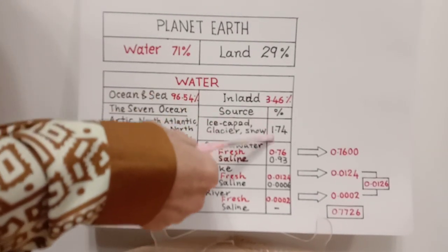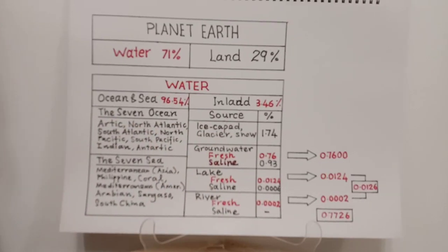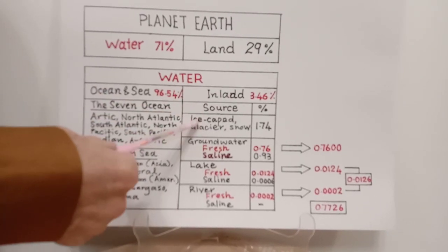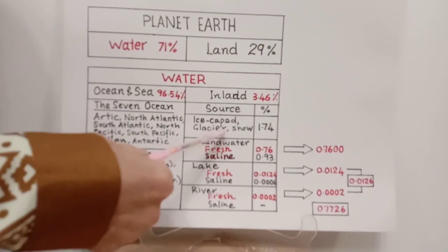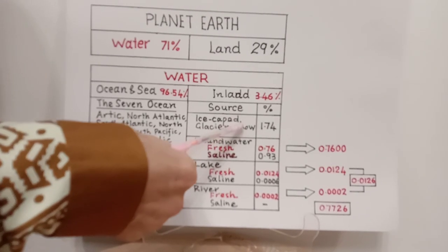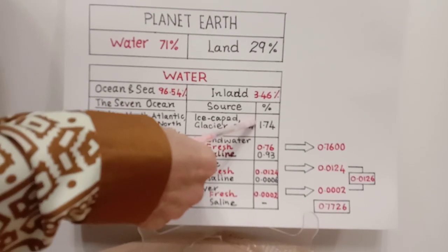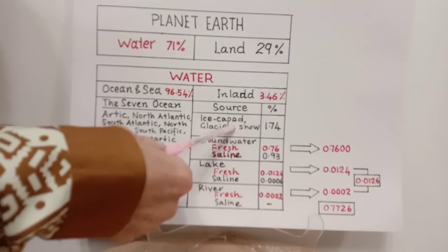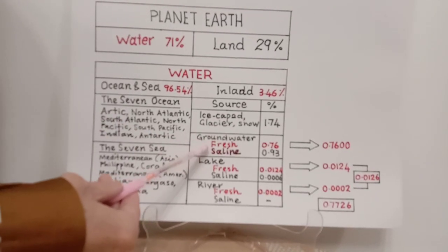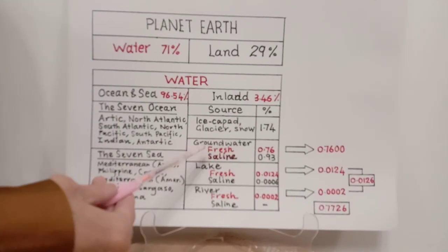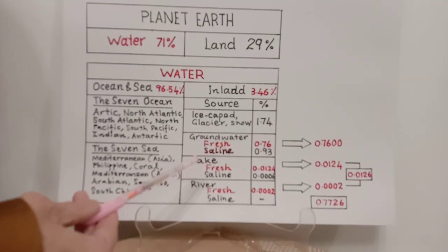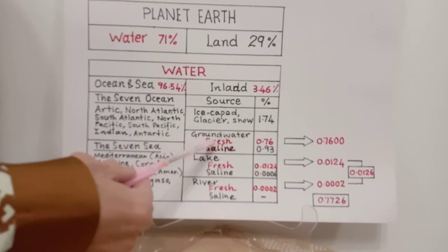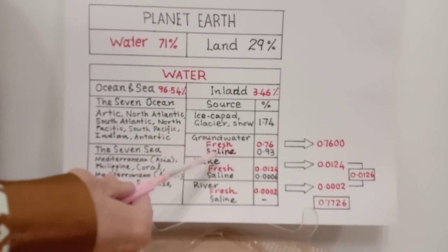In inland water, there are four types of water bodies. The largest contributor to inland water is ice caps, glaciers, and permanent snow, which contribute about 1.74% of the inland water. The second category is groundwater — water found below the Earth's surface — which can be divided into freshwater or saline water.